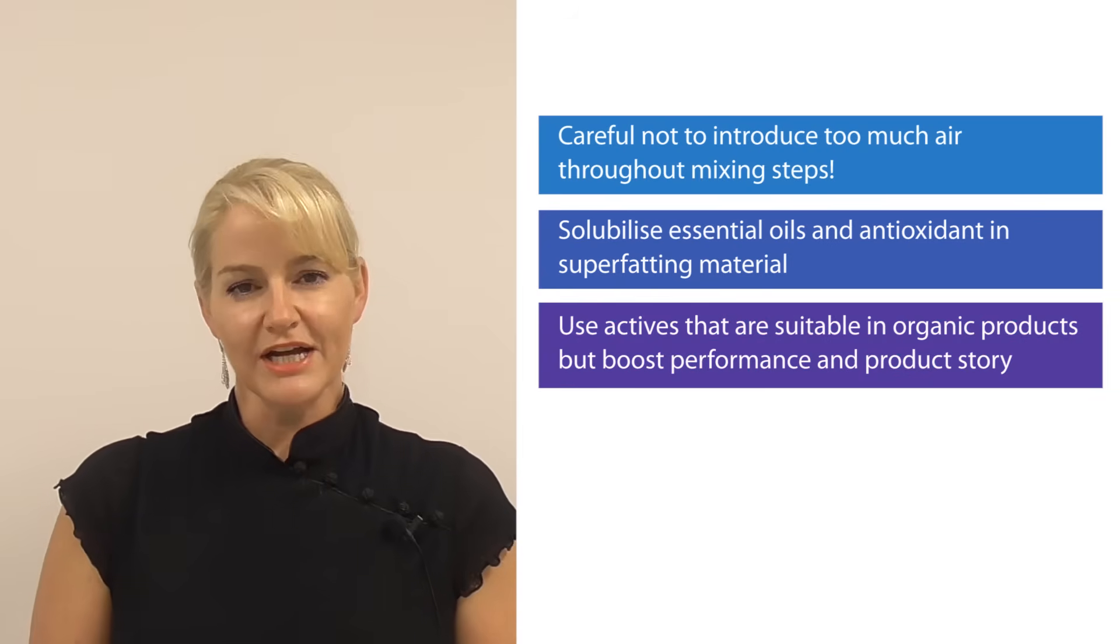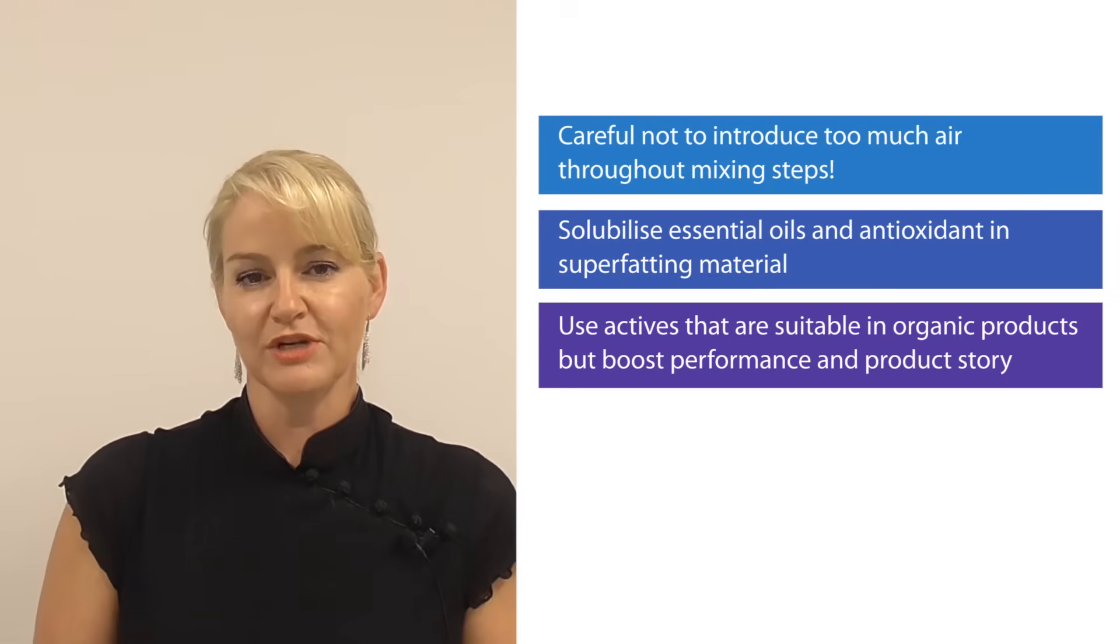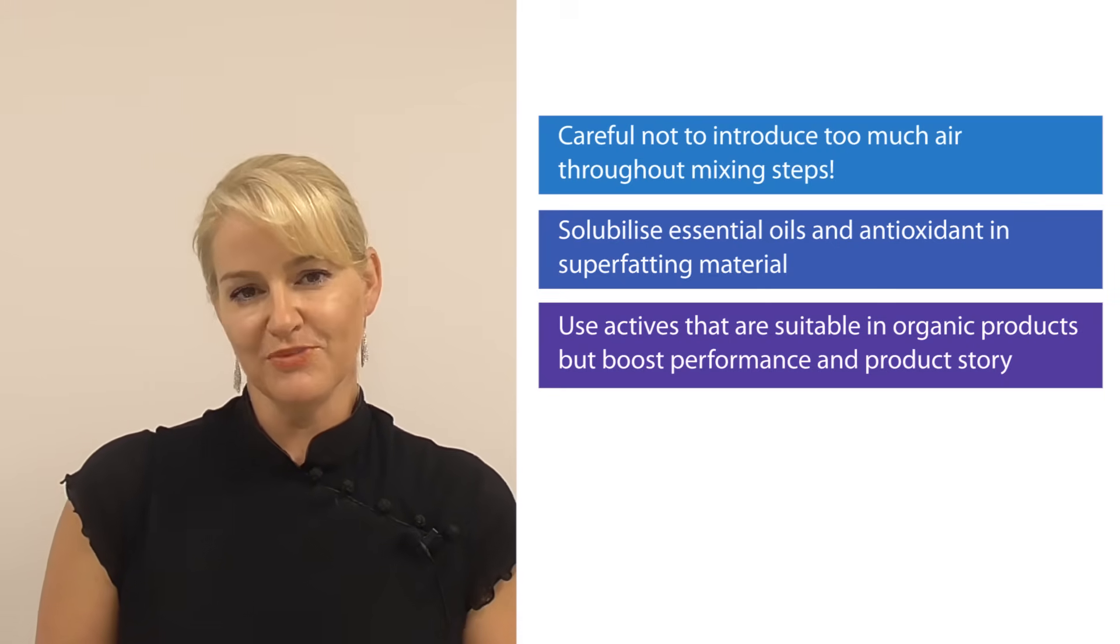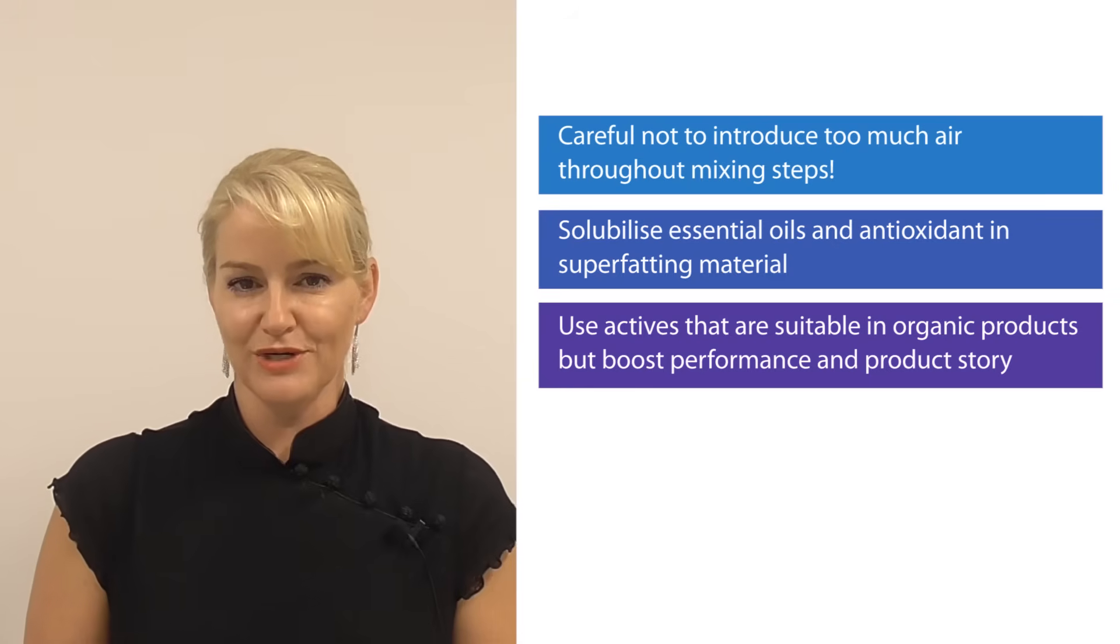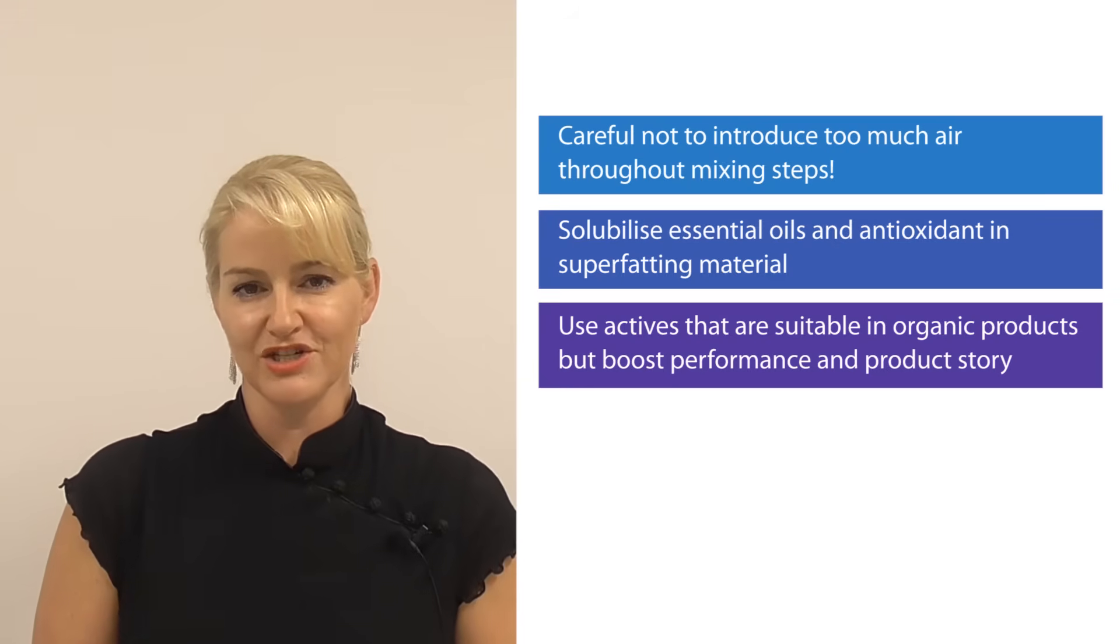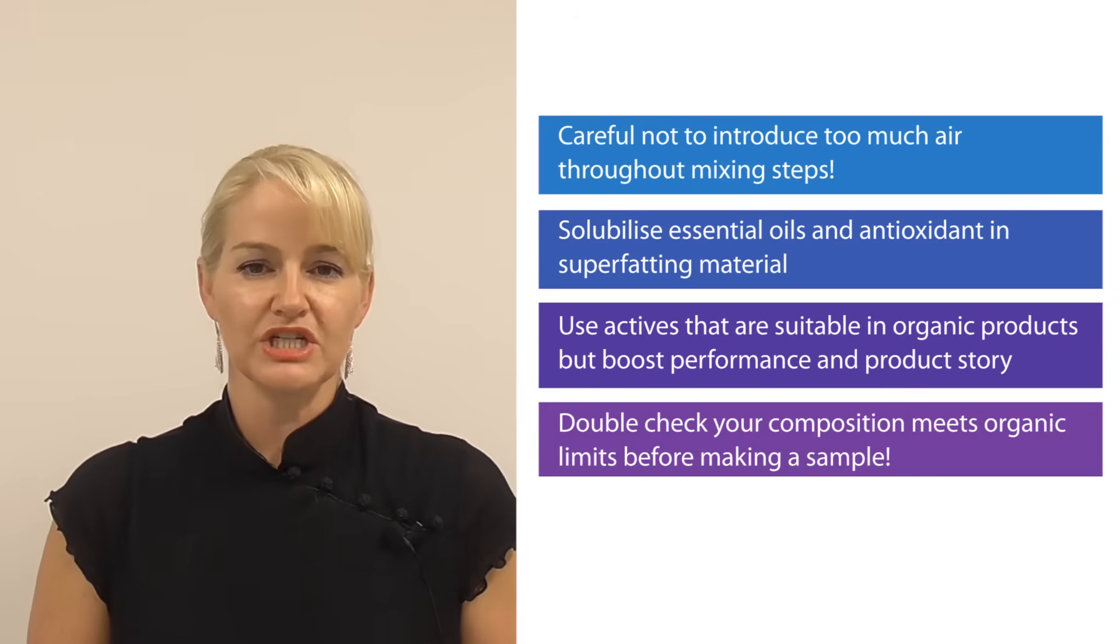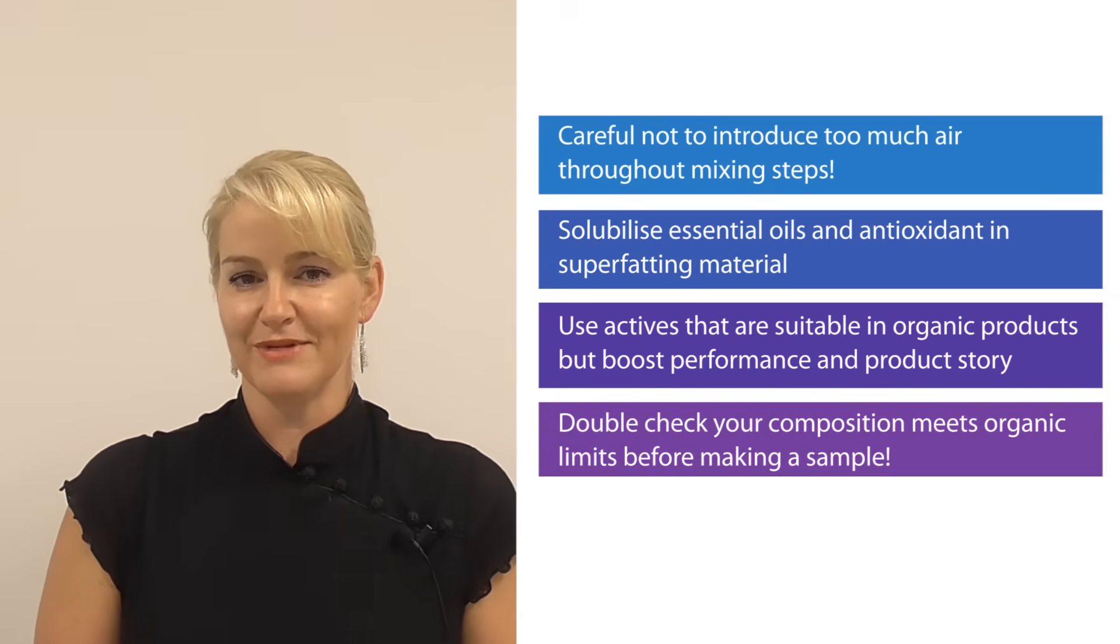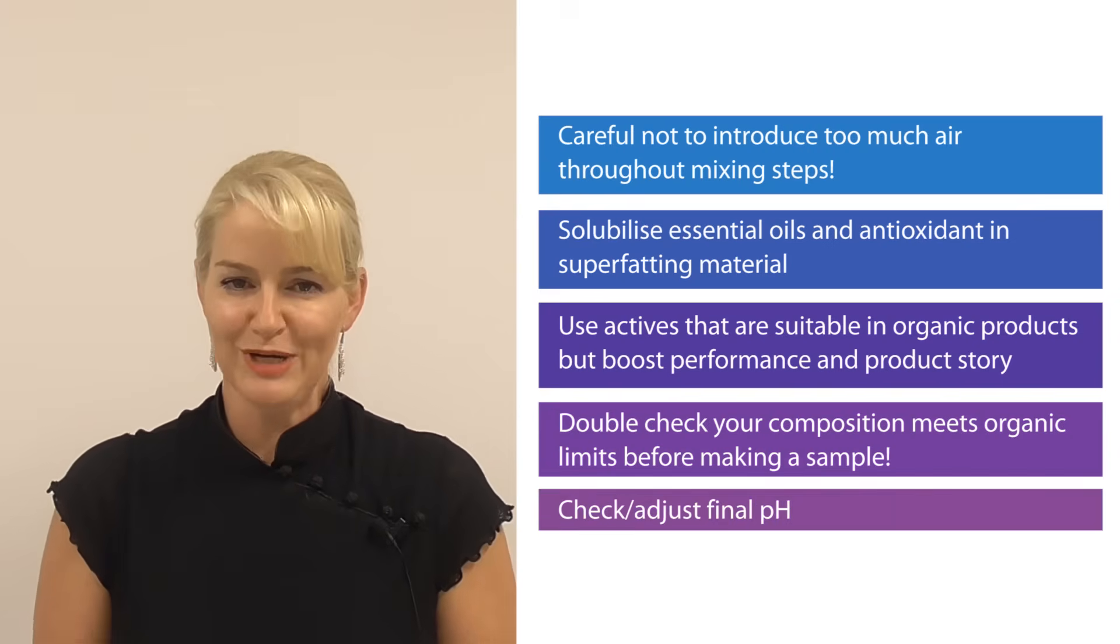I've included an extract that has a great product story and efficacy data, so that I know my consumers would get the performance they're expecting from the product. It also has a great story that fits in with the target market. So make sure you use an active that gives a great story too and complies with Cosmos certification. Double-check all of your inputs to make sure you've achieved your compositional limits. Otherwise there's no point to creating the organic product if you can't achieve certification requirements. And of course, check and adjust that final pH to make sure it's where it needs to be.